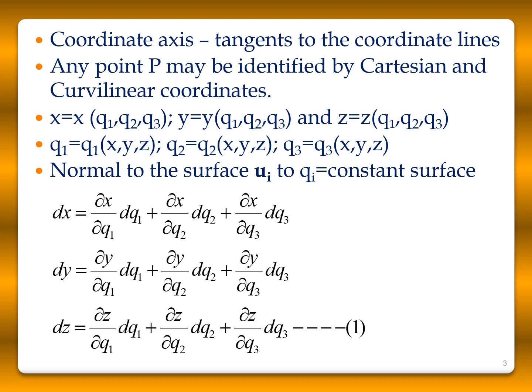Here x is a function of q1, q2, q3; y is a function of q1, q2, q3; and z is a function of q1, q2, q3. Similarly, we can write the curvilinear coordinates q1, q2, q3 as functions of the Cartesian coordinates x, y, z. That is: q1 = q1(x,y,z), q2 = q2(x,y,z), and q3 = q3(x,y,z). Now, if you take a normal to each surface where q1, q2, or q3 is constant.